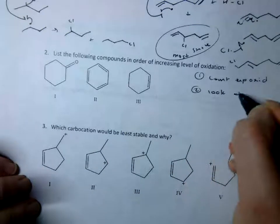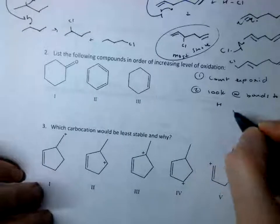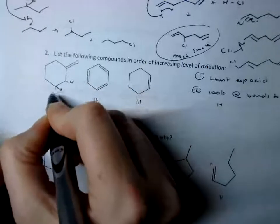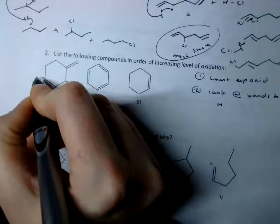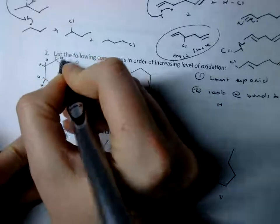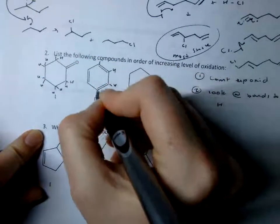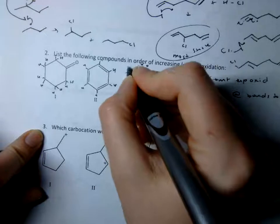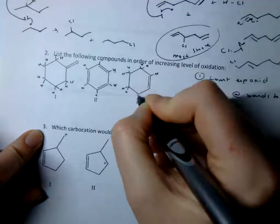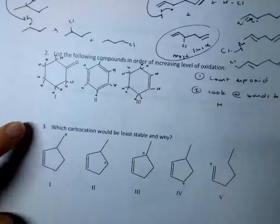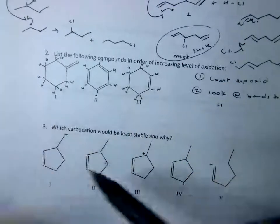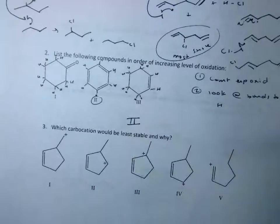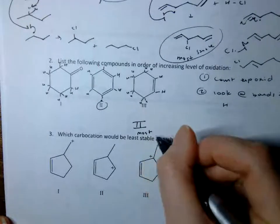So I look at bonds to hydrogen. This one draws my eye first — it has a double bond to an oxygen, but there are two hydrogens at each of these points, so that's not great. Counting the hydrogen bonds on that compound I get eight total, while this one has only six. So I'm saying this one with six bonds to hydrogen is going to be the most oxidized.